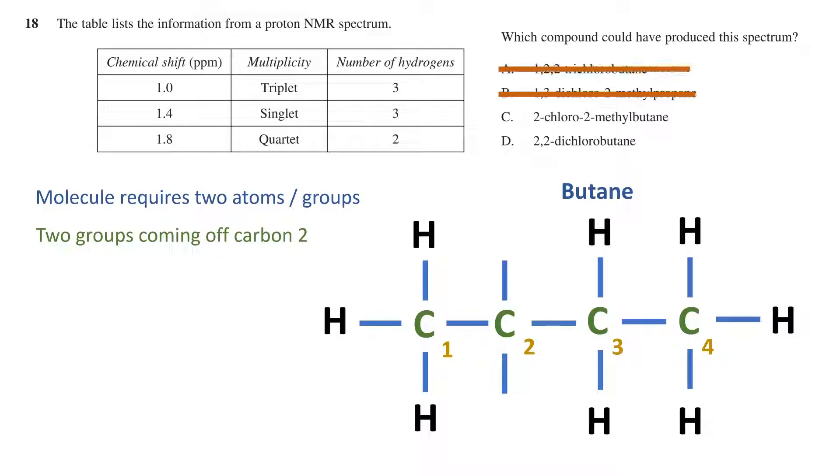We can eliminate option A now, because it has three groups attached to the butane main chain. Therefore, we are left with options C and D.